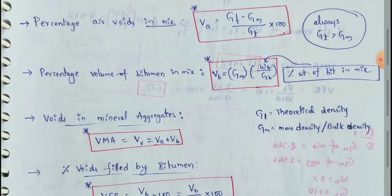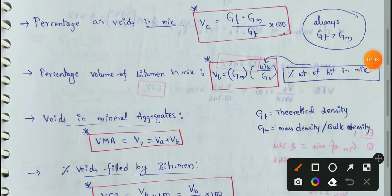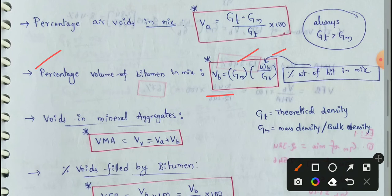Next: percentage volume of bitumen in the mix. Vb equals Gm multiplied by Wb (percentage weight of bitumen in the mix), divided by Gb (bitumen specific gravity). So Vb gives the volume of bitumen value. These are very important formulas which we will use to solve problems in the next videos.